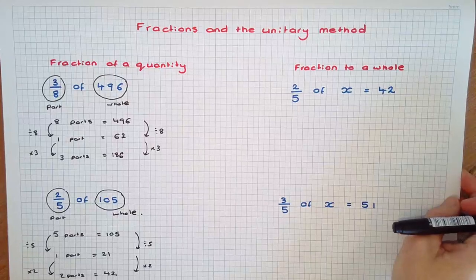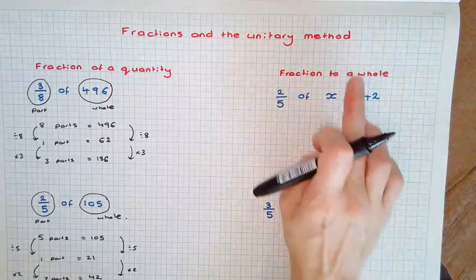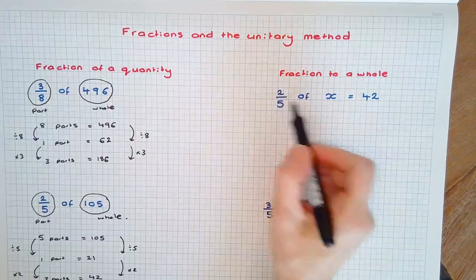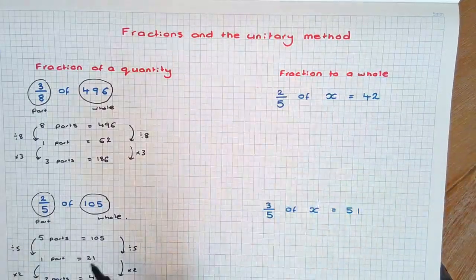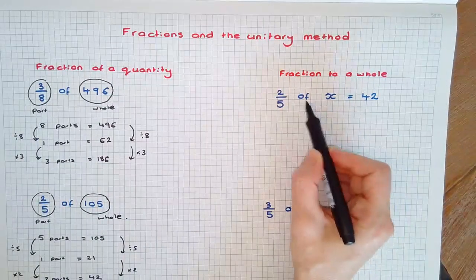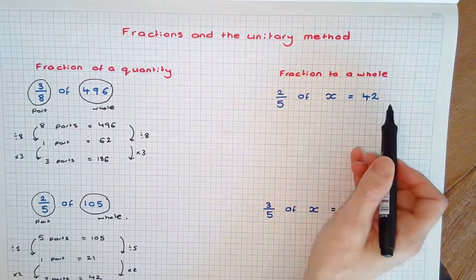The other way we can use the unitary method is where we have a fraction to a whole. Here, we have 2 fifths of something equals 42. This is the question rearranged. We need to find 2 fifths of what equals 42.